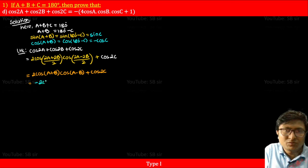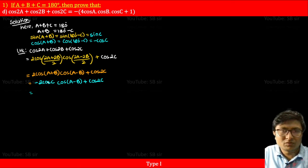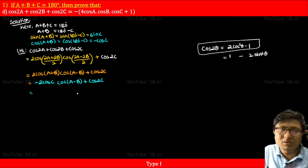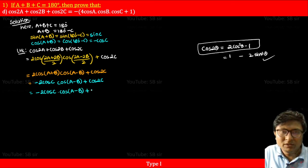So further it becomes minus 2cosC cos(A-B) plus cos2C. Now for cos2C, we use the double angle formula. cos2θ can be written as 2cos²θ minus 1. So cos2C equals 2cos²C minus 1. Substituting, we get minus 2cosC cos(A-B) plus 2cos²C minus 1.